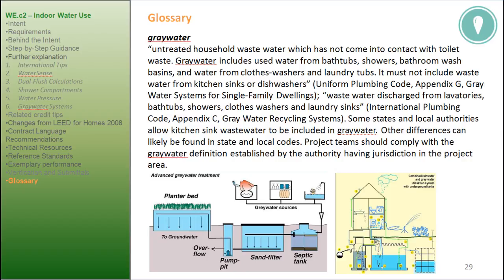Glossary. Gray water: untreated household wastewater which has not come into contact with toilet waste. Gray water includes used water from bathtubs, showers, bathroom wash basins, and water from clothes washers and laundry tubs. It must not include wastewater from kitchen sinks or dishwashers (Uniform Plumbing Code, Appendix G — Gray Water Systems for Single-Family Dwellings; International Plumbing Code, Appendix C — Gray Water Recycling Systems). Some states and local authorities allow kitchen sink wastewater to be included in gray water; other differences can be found in state and local codes. Project teams should comply with the gray water definition established by the authority having jurisdiction in the project area. Potable water: water that meets or exceeds U.S. EPA drinking water quality standards, or a local equivalent outside the U.S., and is approved for human consumption by the state or local authorities having jurisdiction; it may be supplied from wells or municipal water systems.